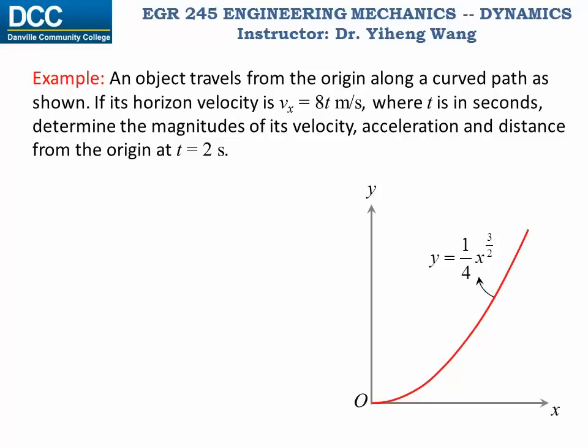So since vx equals to dx over dt, we can use the vx function to first find the horizontal position x as a function of time. Since vx equals to dx over dt equals to eight times time, through simple integration we can get x the horizontal position equals to four t squared.